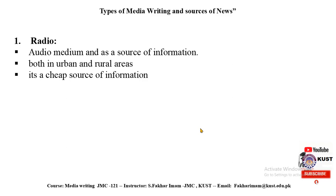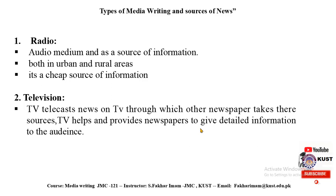The second source is television. Television telecasts news through which other newspapers take their sources. It is said to be the most authentic source of news as it has visuals to establish authenticity. Television helps and provides newspapers with detailed information to give to the audience, and it also serves as a direct source for the audience itself.